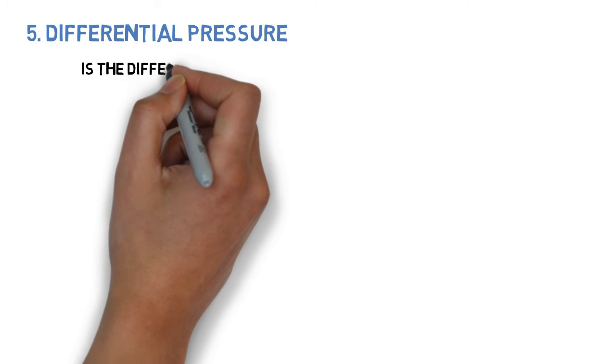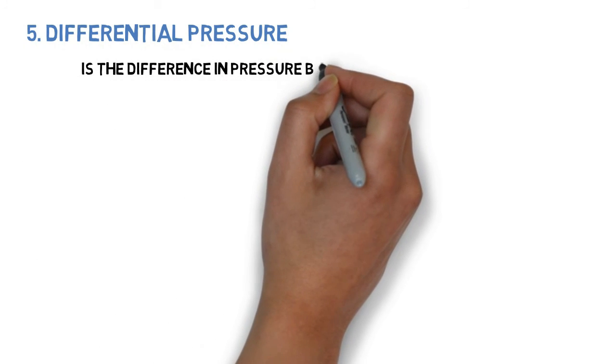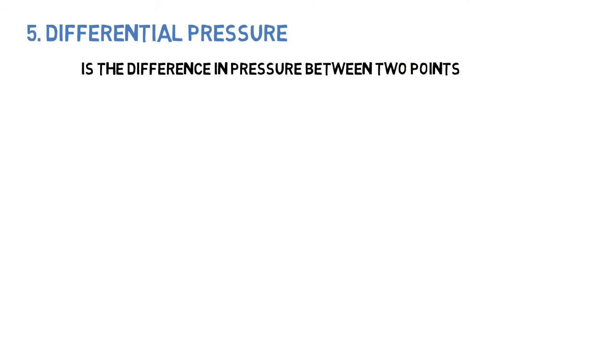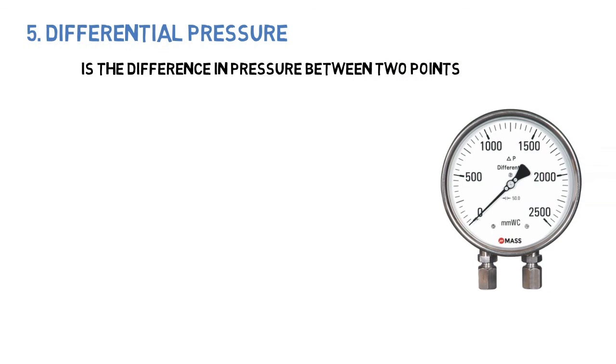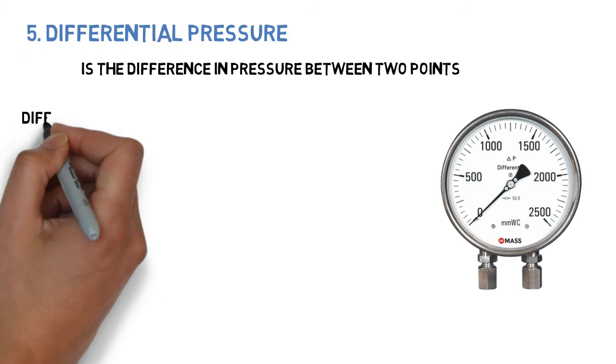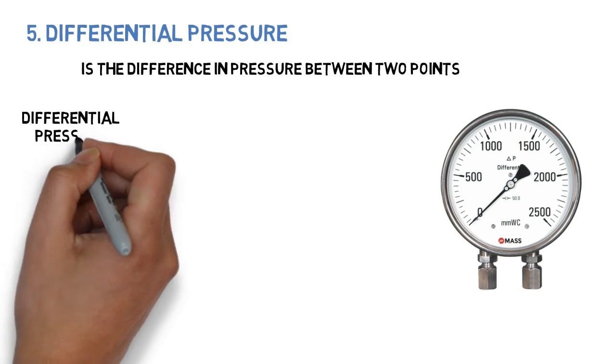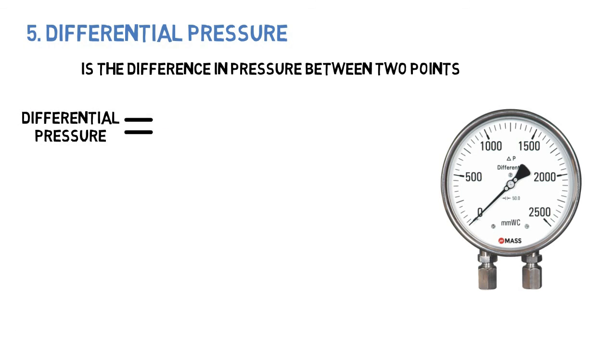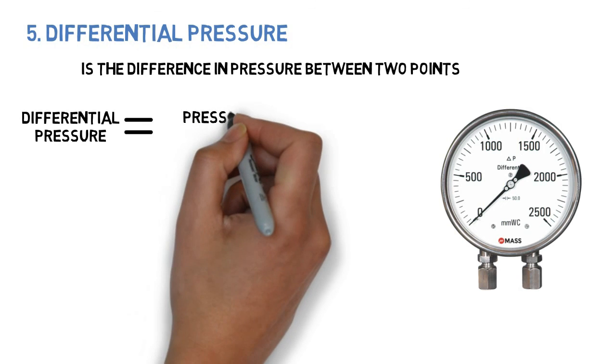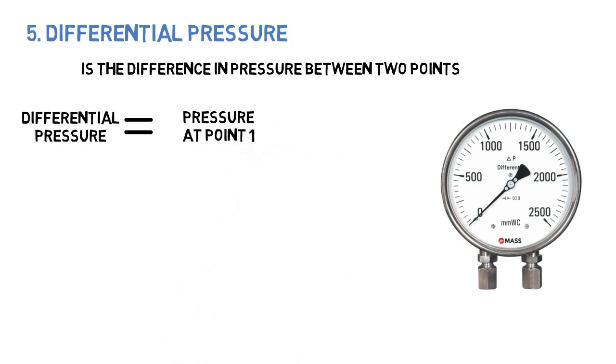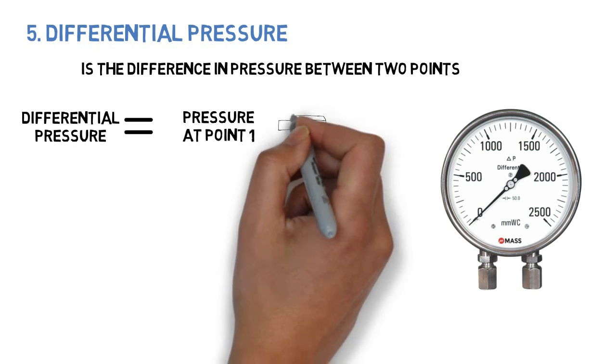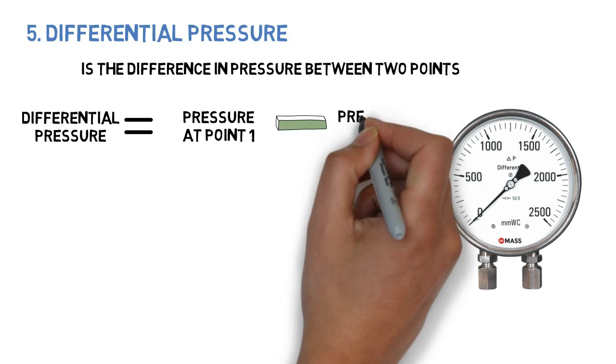Differential pressure is the difference in pressure between two points. Differential pressure is equal to pressure at point one minus pressure at point two.